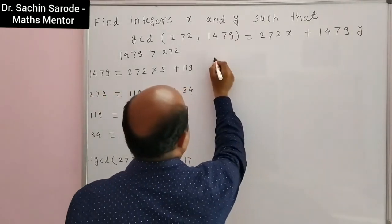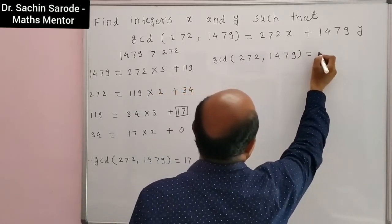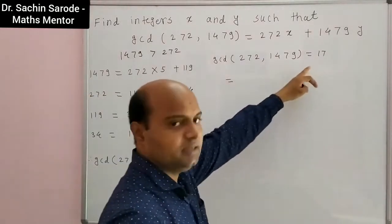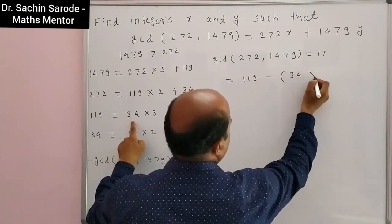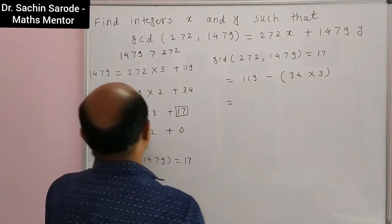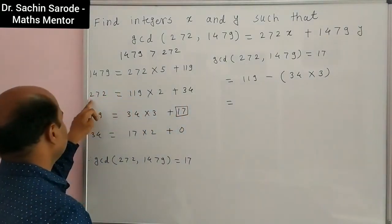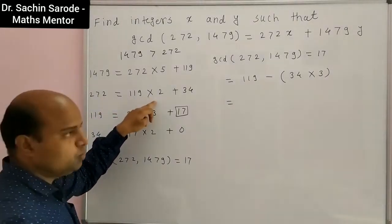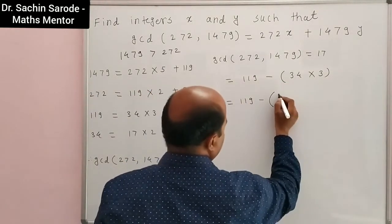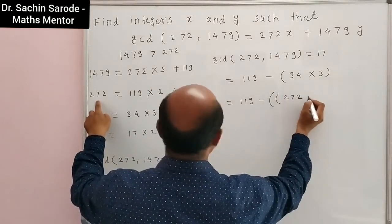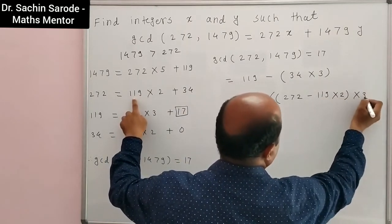So we can write GCD of 272 and 1479 is equal to 17. From the steps, we write 17 = 119 − 34 × 3. Now go one step above: 34 can be written as 272 − 119 × 2. Substituting: 17 = 119 − (272 − 119 × 2) × 3.